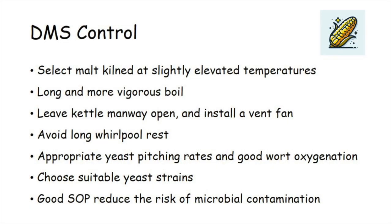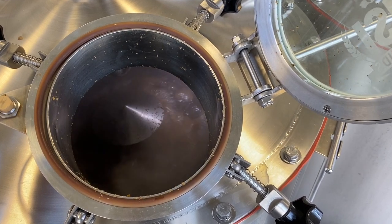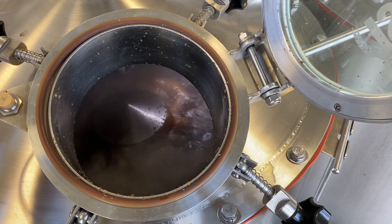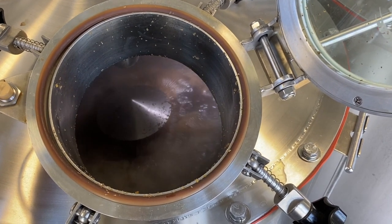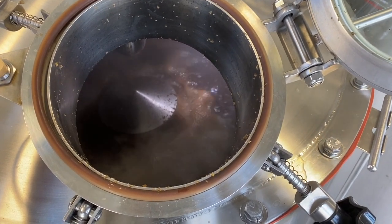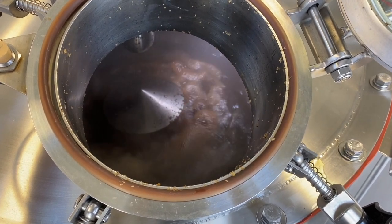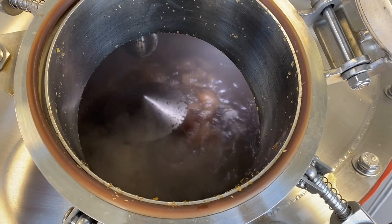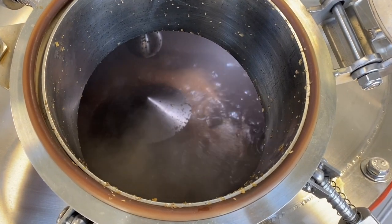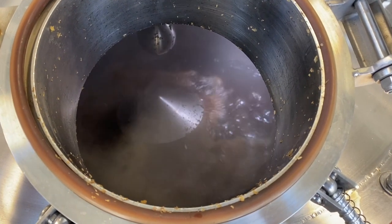As a volatile compound, DMS will evaporate from the wort during boiling. A longer and more vigorous boil, typically 60 to 90 minutes, ensures more DMS is removed from the wort. If the boil is too short, not enough DMS will escape and the compound may remain in the beer. If possible, the kettle manway should be left open to help prevent DMS from recondensing back into the wort. Additionally, installing a vent fan can help drive off more volatile compounds.